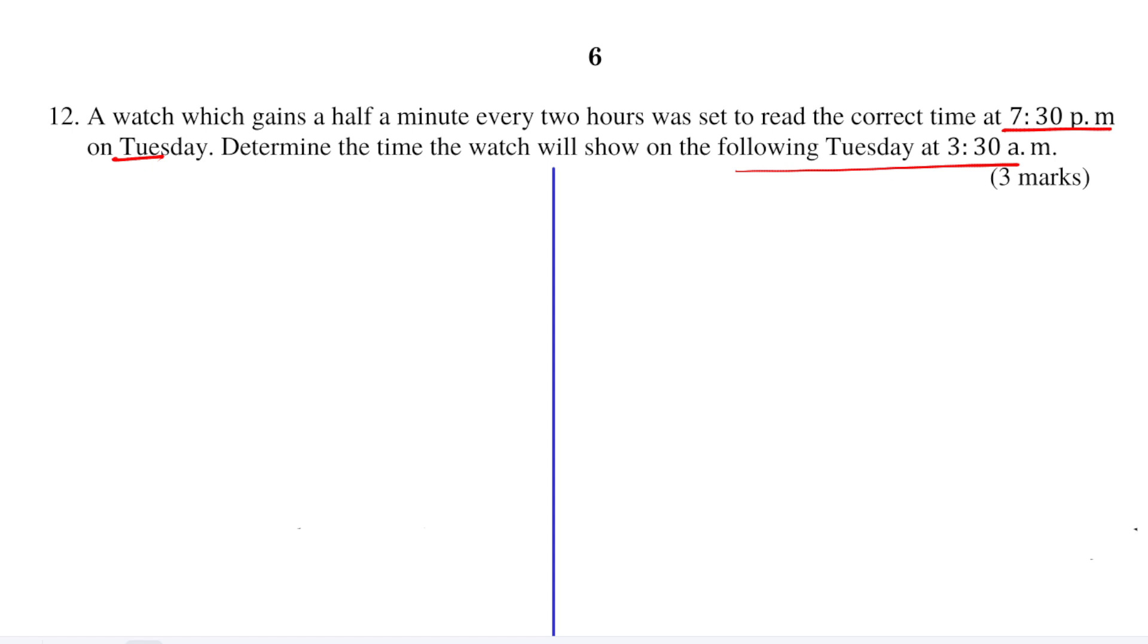From Tuesday, 19:30 is the same as 7:30 PM in 24-hour clock system. From Tuesday 19:30 to Wednesday 19:30, these will be 24 hours. Then from Wednesday to Thursday 19:30, again another 24 hours.